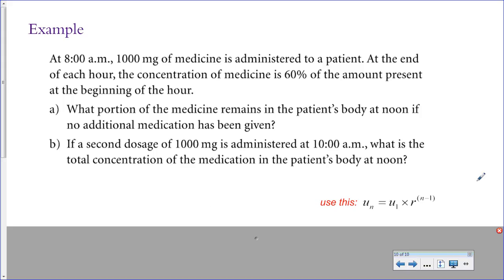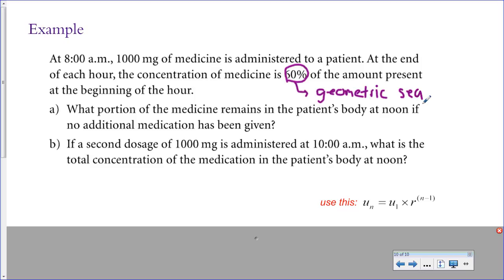Here's a final example of a geometric sequence built into a word problem. At 8 o'clock a.m., 1,000 milligrams of medicine is given to a patient. At the end of each hour, the concentration is 60% of the amount present at the beginning of the hour — so the medication starts to wear off over time. Anytime you have something increasing or decreasing by a percent like this, this is a geometric sequence, and this will come up on tests and exams. If something is decreasing or increasing by a percent, you can use the geometric sequence formula.